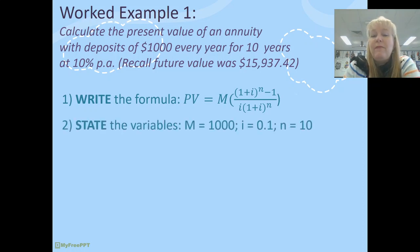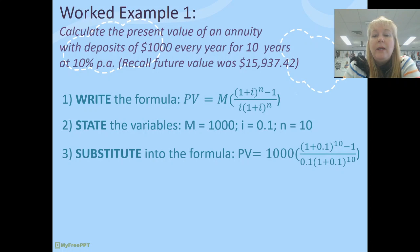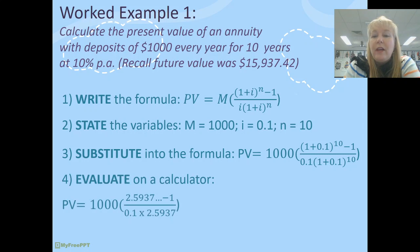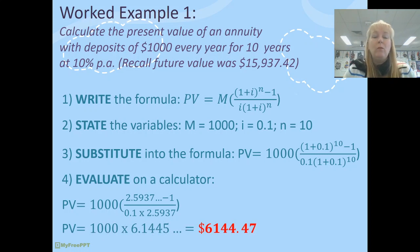So we're going to state our variables. I've kept these fairly simple in this case. We're going to substitute that into the formula and then it's a really good idea to evaluate this slowly. So I've evaluated 1 plus 0.1 to the power of 10. That comes to 2.59. I've got that on the top and the bottom. And then I'm going to work that out.